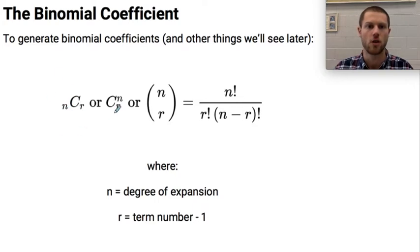We call this n choose r, or you might see this symbol, C with n on top and r on the bottom, or you might see n over r, almost written like a vector but not a vector. We call this n choose r and it's given by this equation: n factorial over r factorial times n minus r factorial.